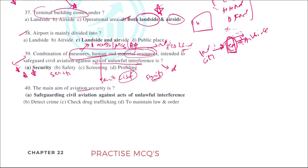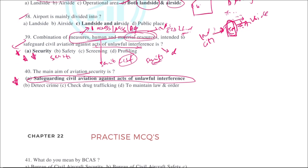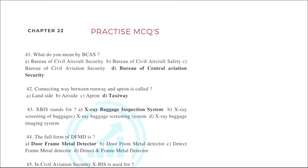The minimum of aviation security is safeguarding civil aviation against acts of unlawful interference — the straightforward definition of AVSEC. BCAS stands for Bureau of Civil Aviation Security. Note: there is a small error in the book where the wrong option was bolded; the correct answer is Bureau of Civil Aviation Security.